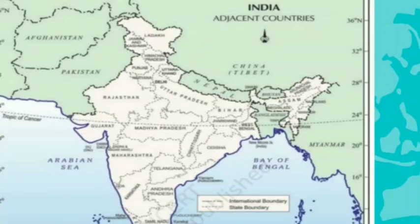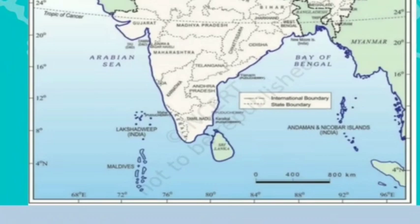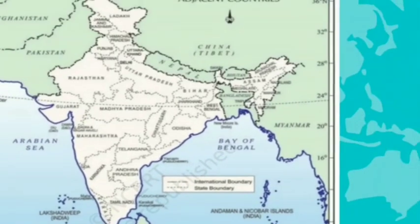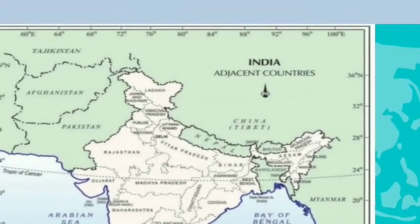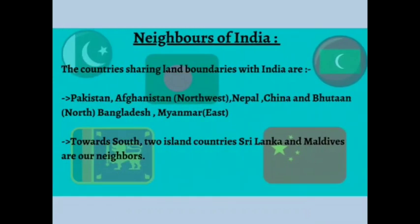Looking at the map of India, towards the west are Pakistan and Afghanistan, towards the north are Nepal, China, and Bhutan, and towards the east are Myanmar and Bangladesh. These countries share a land boundary with India. The two island countries Sri Lanka and Maldives are also our neighbours.